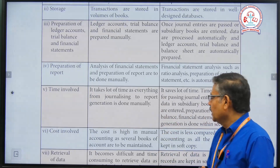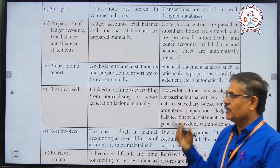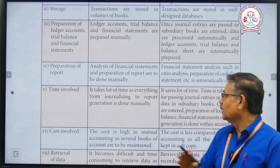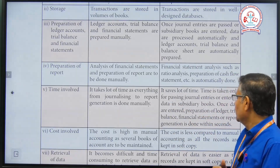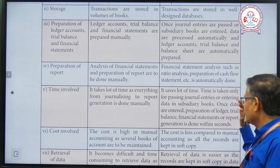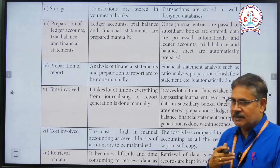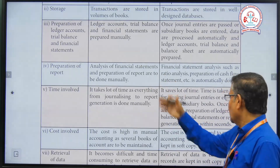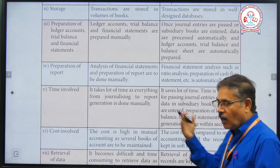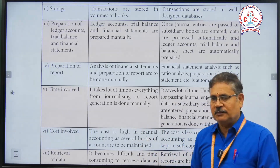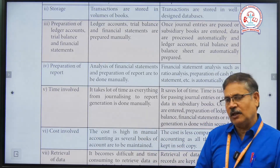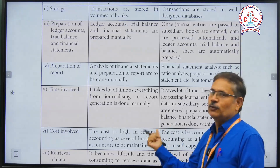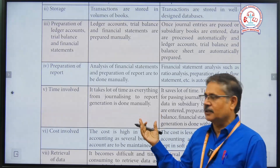The next point is time involved. In the manual system, everything — journalizing, reporting, closing — is done manually and takes time. But in the computerized system, it saves time. When you pass a journal entry, it automatically moves to other entries — ledger, trial balance, balance sheet, trading and profit account, and so on. It is very easy to use, and within a few seconds the entries are completed.